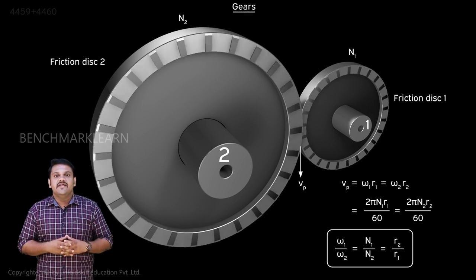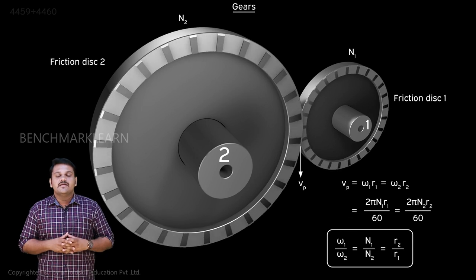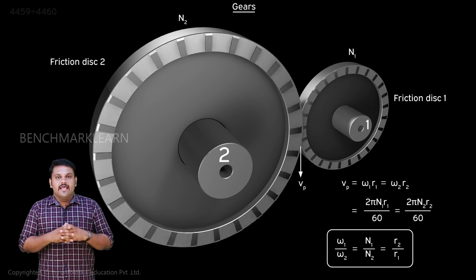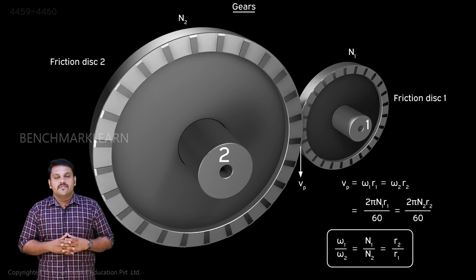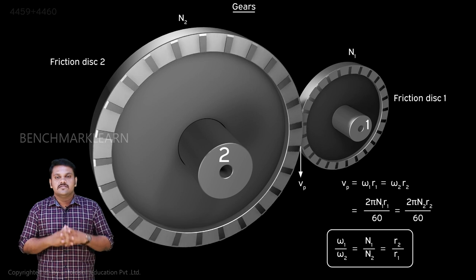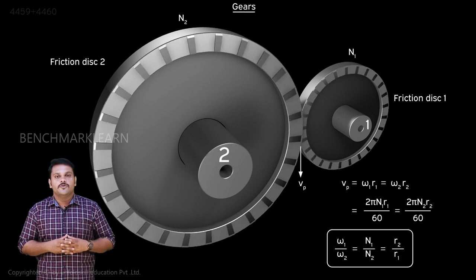Where r is the radius of the disc, ω is the angular velocity, n is the speed in rpm, suffix 1 refers to disc 1, and suffix 2 refers to disc 2.